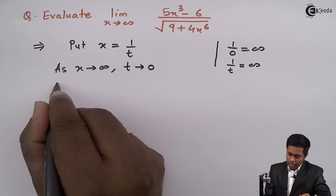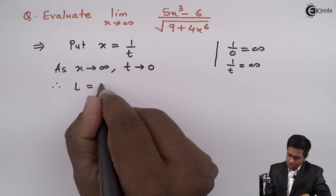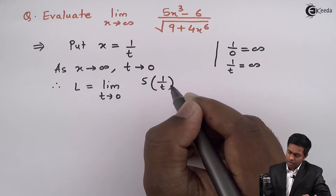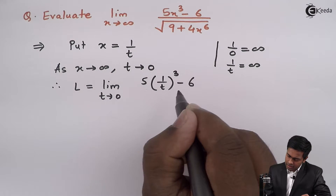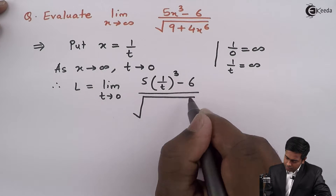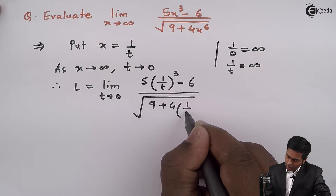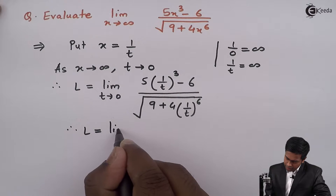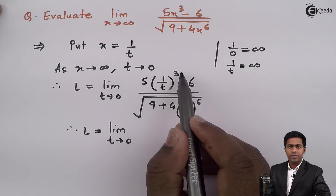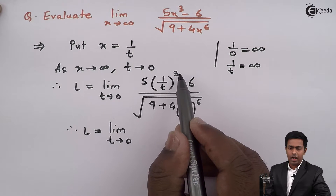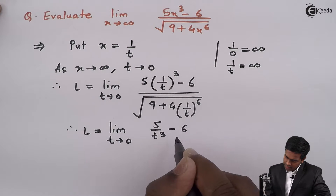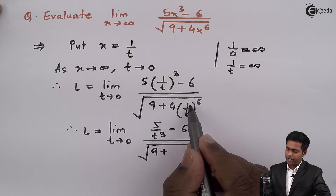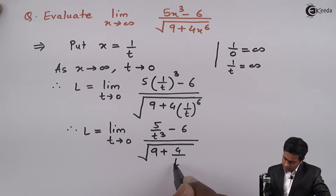Now let us solve the problem. We call this limit L. So L equals limit t tends to 0 of 5 times 1 upon t, whole cubed, minus 6, upon the square root of 9 plus 4 times 1 upon t whole raised to 6. Expanding: 1 cubed is 1, so the numerator becomes 5 upon t cubed minus 6, and the denominator has 9 plus 4 upon t raised to 6.